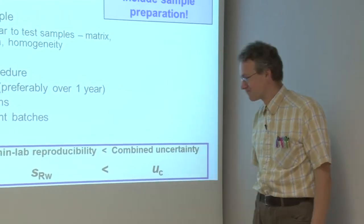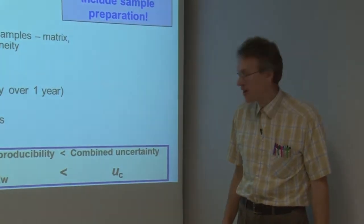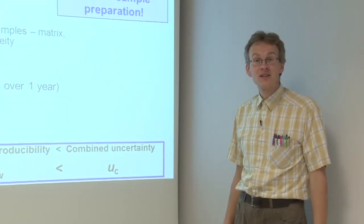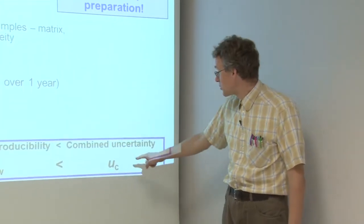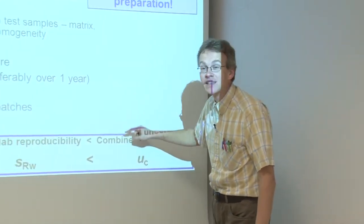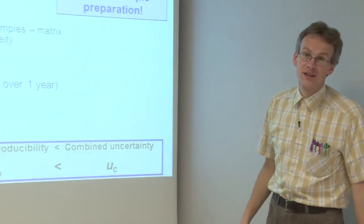On the other hand, SRW is still smaller than the combined standard uncertainty because the combined standard uncertainty also has to include systematic effects that remain systematic even over this long time period.